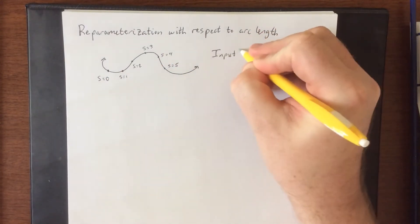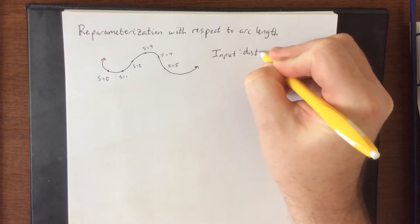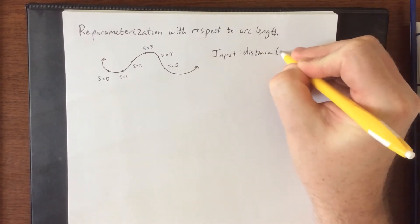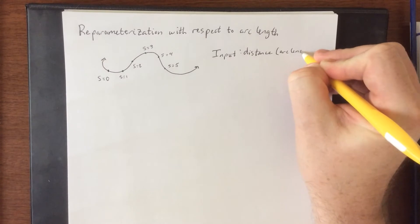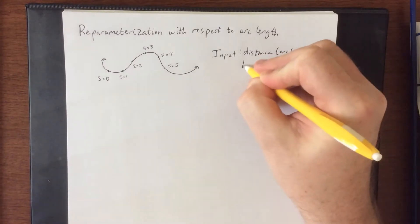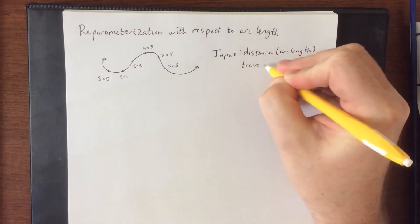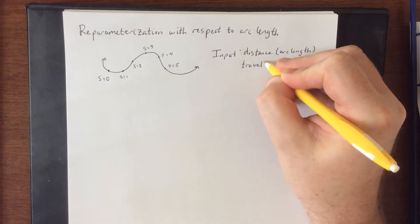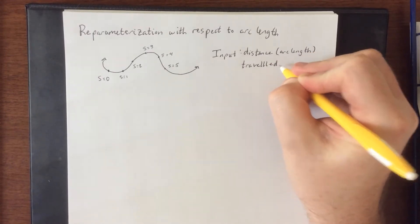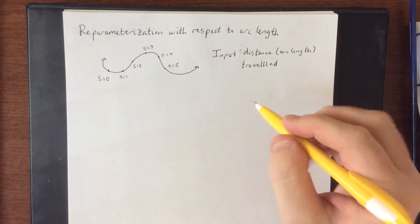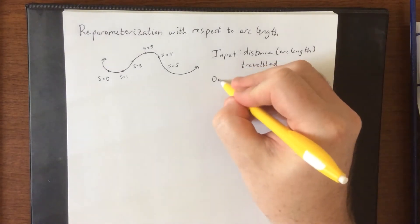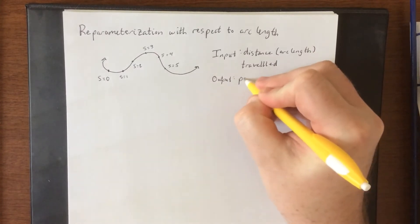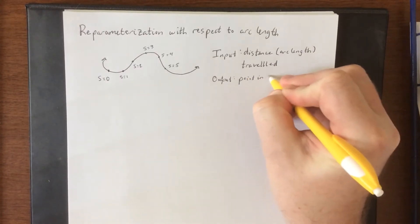So input distance, or arc length, traveled - I never know how many L's are supposed to go into it, so I'm going to put three, just in case. So distance traveled, and the output is your point in space.